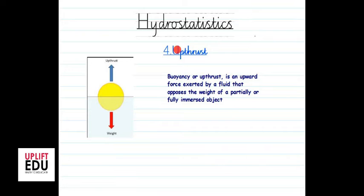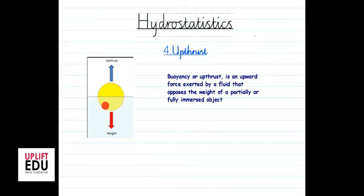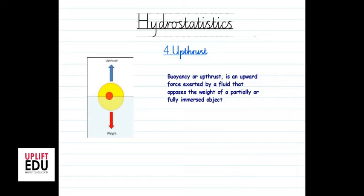The fourth topic under hydrostatics is upthrust. Upthrust is the force created by a liquid to oppose an object that is immersed in it. Buoyancy or upthrust is an upward force exerted by a fluid that opposes the weight of a partially or fully immersed object. When we immerse an object into a liquid, it automatically creates a force opposite to the object's weight.